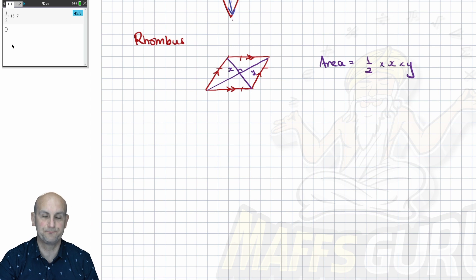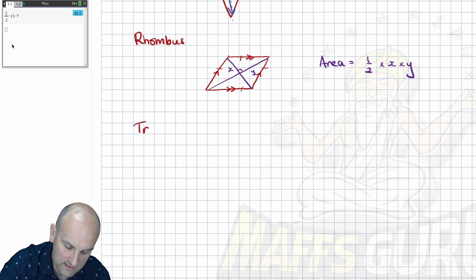Now, because a rhombus is a parallelogram, if they had given me this measurement here, and that height, they are exactly the same. So in that situation, I'd be just doing that times that. But when they give me these diagonals, I have to use the formula there.